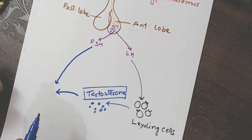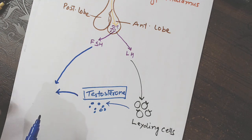And it will go to Sertoli cells and spermatogenic cells or spermatogonial cells ko stimulate karega. And there will be starting of spermatogenesis.